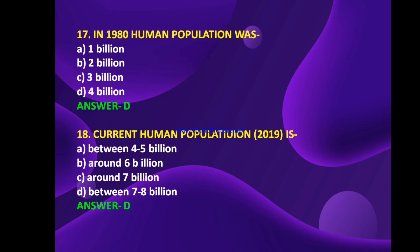In 1980, human population was 1 billion, 2 billion, 3 billion, or 4 billion? The answer is D — in 1980, human population was 4 billion. Current human population in 2019 is between 4 to 5 billion, around 6 billion, around 7 billion, or between 7 to 8 billion? The answer is D — current human population in 2019 is between 7 to 8 billion.